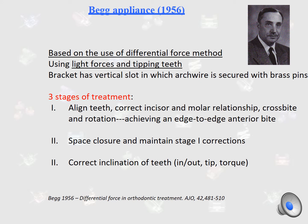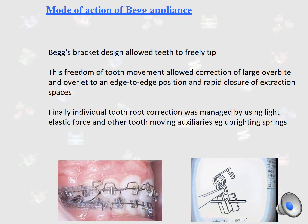Begg appliances are based on the use of the differential force method, using light forces to tip teeth. The bracket has a vertical slot in which the archwire is secured with a brass pin. There are three stages of treatment: the first stage is aligning teeth, correcting incisor and molar relationships, crossbite and rotation by achieving an edge-to-edge anterior bite. The second stage is space closure and maintaining stage one corrections. The final stage is correcting the inclination of the teeth. The Begg bracket design allows teeth to freely tip, enabling correction of large overbites and overjets to an edge-to-edge position and rapid closure of extraction spaces. Individual tooth root correction is managed using light elastic forces and auxiliaries such as uprighting springs.